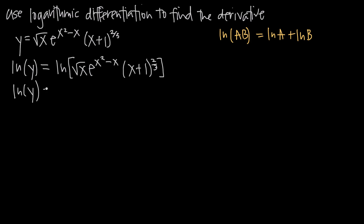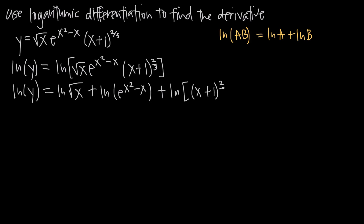We rewrite this as the natural log of the square root of x — our first function — plus the natural log of our second function, e to the x squared minus x, plus the natural log of our third function, quantity x plus 1 raised to the 2 thirds power. To simplify the first term, natural log of the square root of x, we use the formula that the natural log of x to the a equals a times the natural log of x — meaning we can pull an exponent out in front of the natural log.